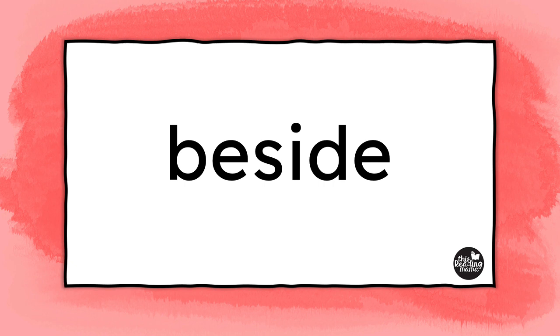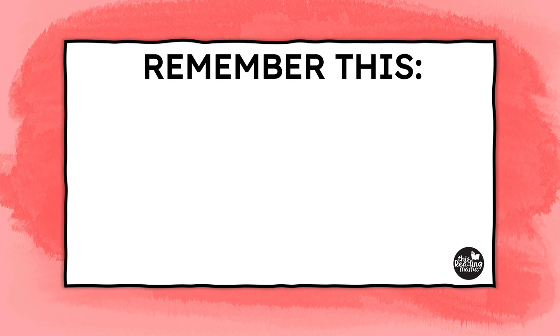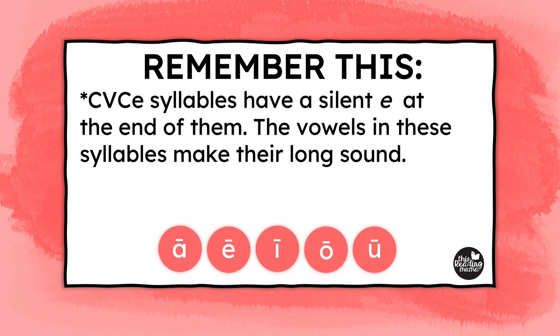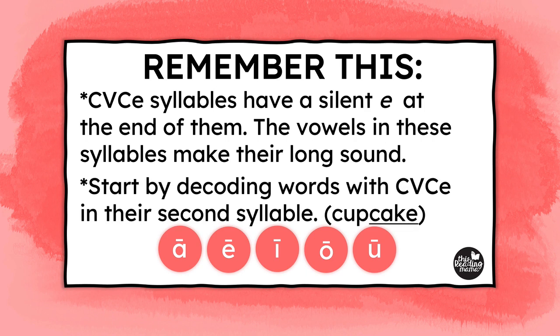Here are a couple of reminders when it comes to teaching silent E syllables. CVCE syllables have a silent E at the end of them, and the vowels in these syllables make their long sound. We want to start by decoding words with CVCE syllables in their second syllables, like in the word cupcake — it makes it more consistent for our readers.